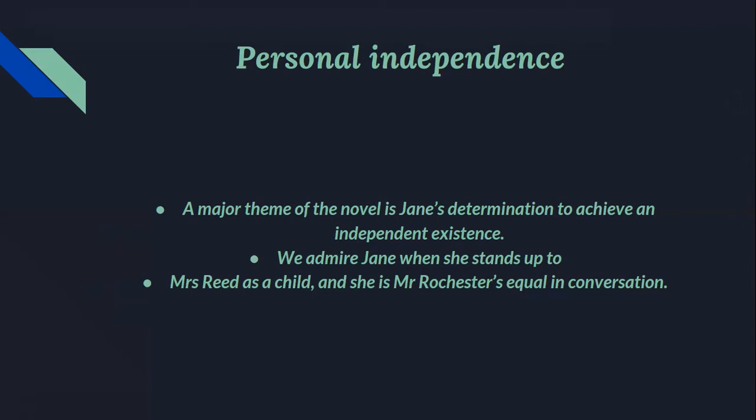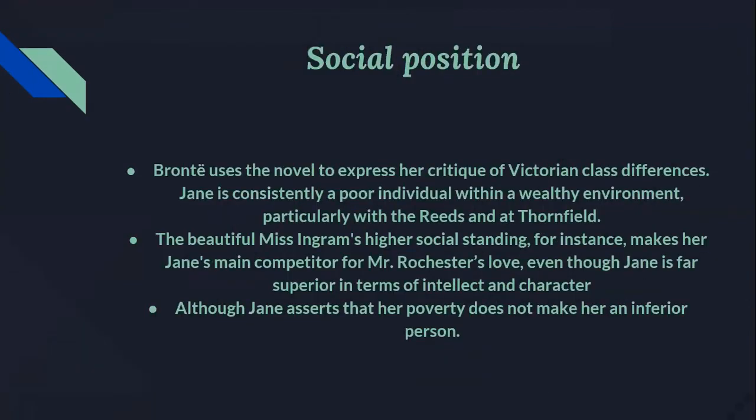The next theme is social position. Social class has been a major theme of this novel. Most of the middle-class characters, from the Reed children to Blanche Ingram, look down on Jane simply because she is poor and think they have the right to humiliate her for that reason alone. Jane's love for Mr. Rochester makes her painfully aware of the boundaries of class. Although she is his intellectual and spiritual equal, she is still socially inferior. They can only marry as equals when Jane conveniently inherits money from her uncle.